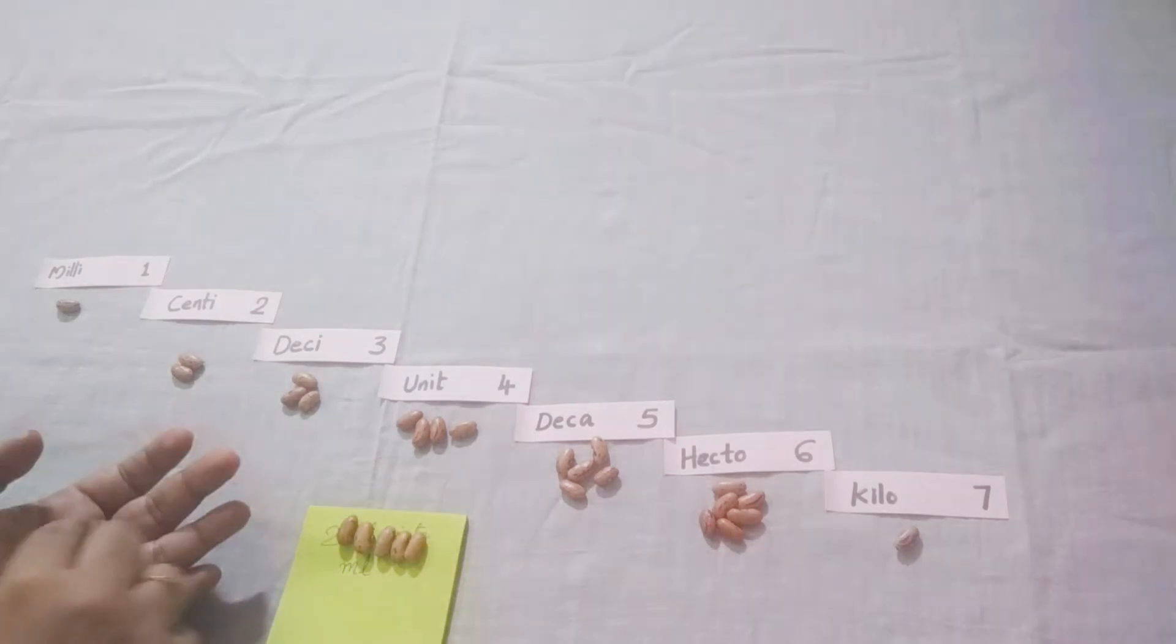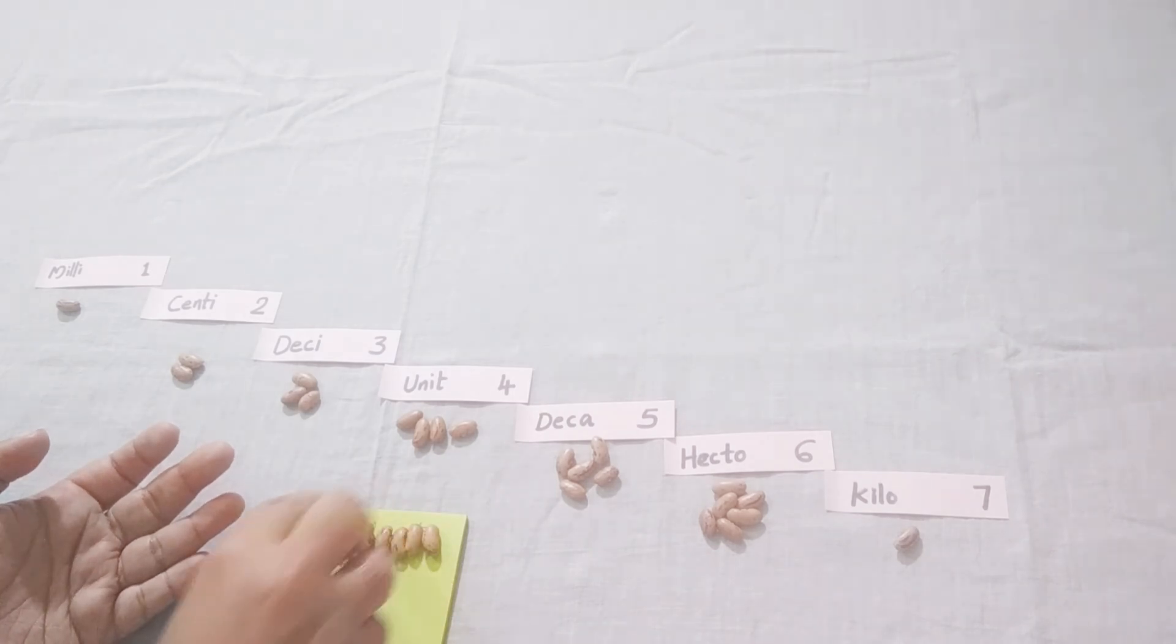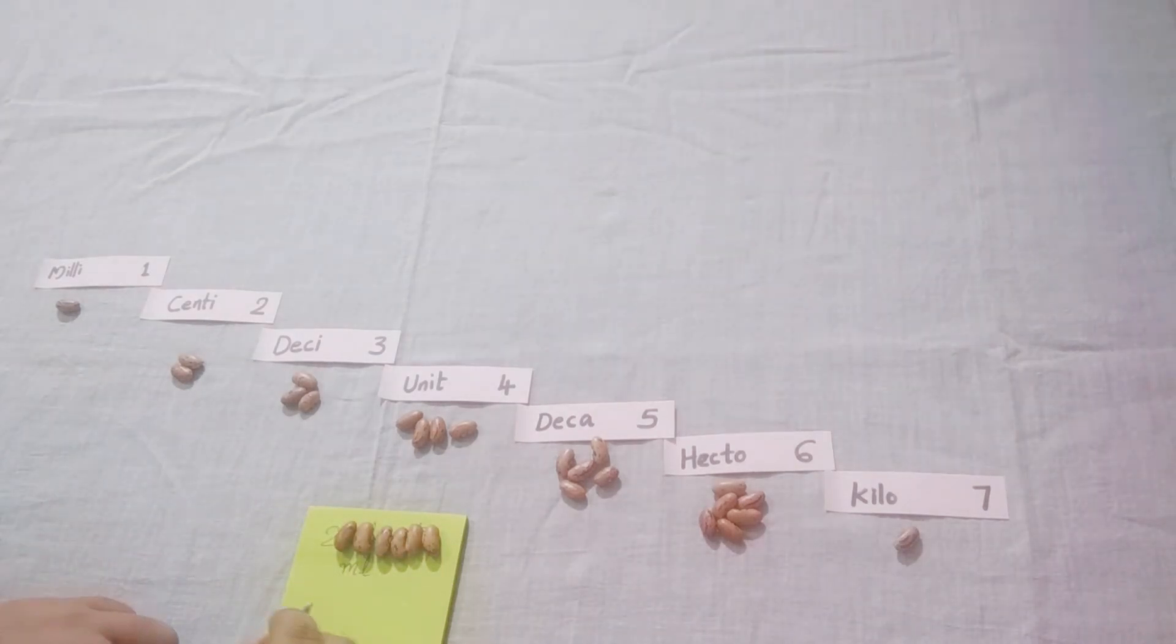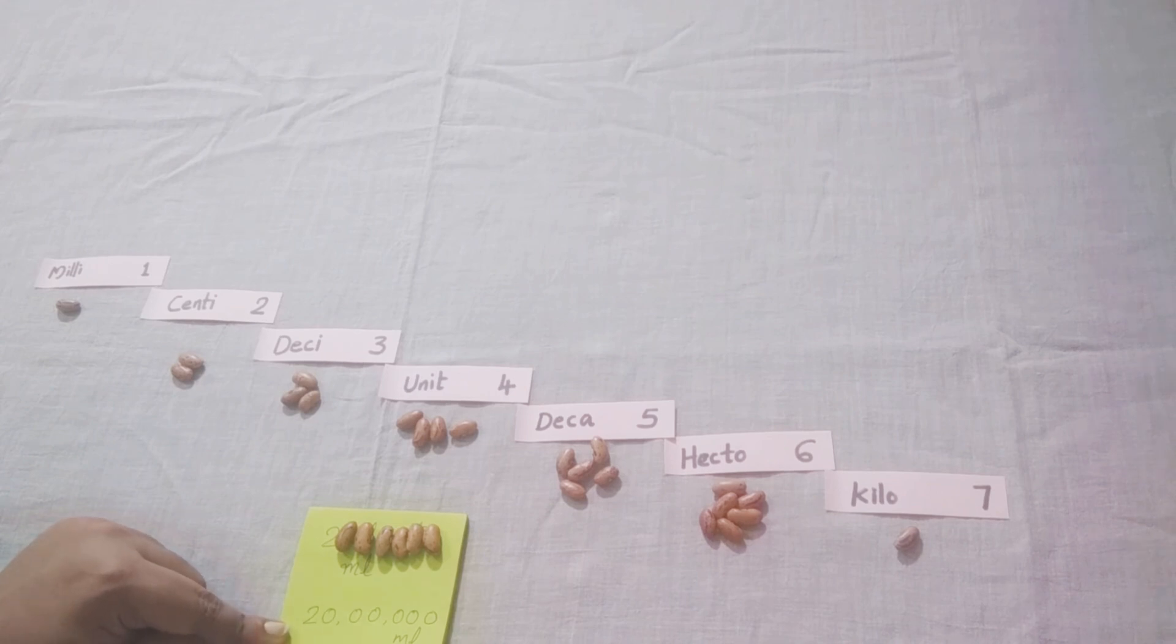One, two, three, four, five, six. Now what is the answer? Two, zero, zero, zero, zero, zero, zero, zero. So our answer is 20 lakh milliliters. So two kiloliters is equal to 20 lakh milliliters.